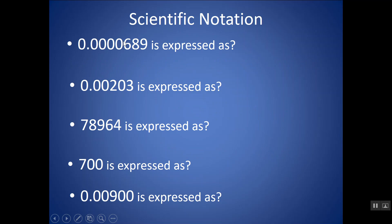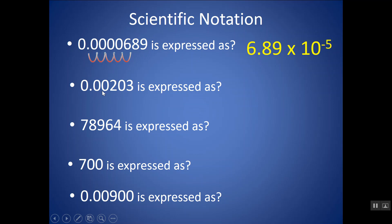Let's practice going between standard notation and scientific notation. This number in standard notation — we want to move the decimal to create a number between 1 and 9.99. We move it 1, 2, 3, 4, 5 places to create 6.89 — that's my coefficient — and I write times 10 to the negative 5. A very small number less than 1 gives a negative exponent. Moving the decimal of the next number 1, 2, 3 places creates 2.03 — keeping all significant figures in the coefficient — times 10 to the negative 3.